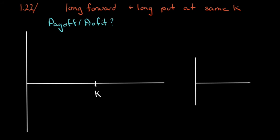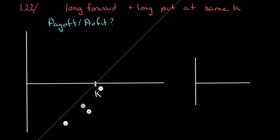In question 1.22, we're presented with a situation where we are long a forward contract and long a put at the same strike price. We need to describe the payoff and the profit from that situation, and the best way to do it is with a payoff and profit chart.